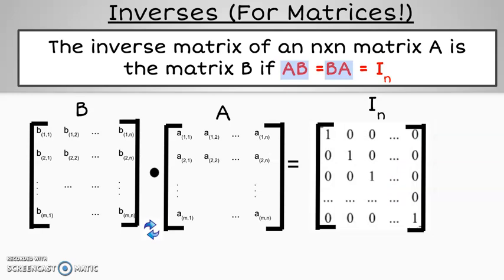Notice its structure. A diagonal from left to right, known as the main diagonal, consists of ones, and the remaining entries are zero.